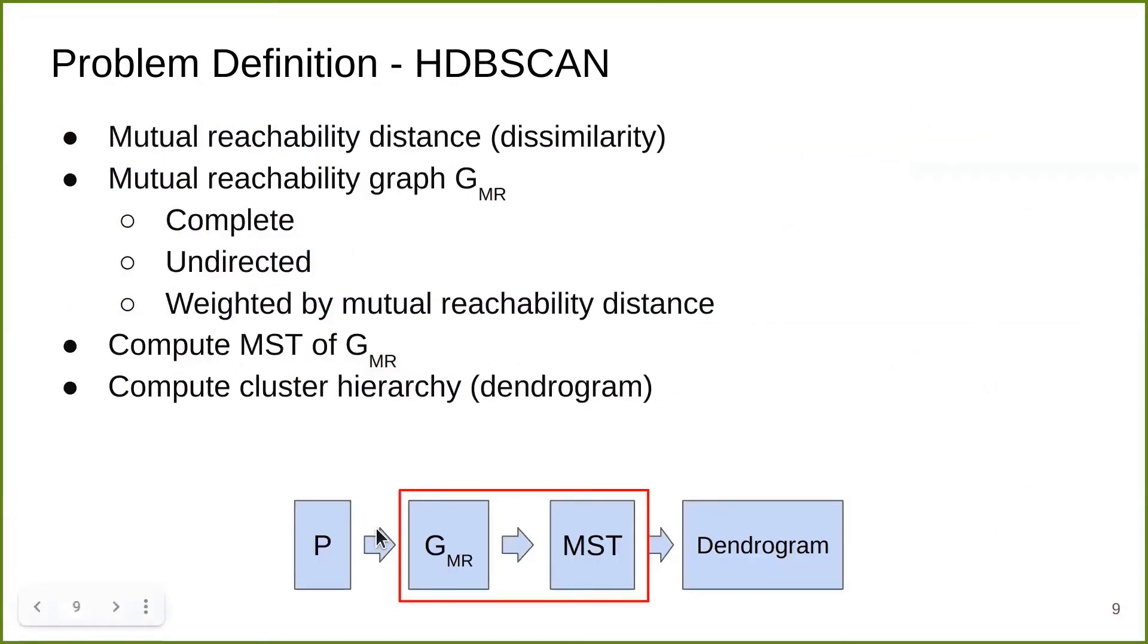Now we know the dissimilarity measure between any pair of objects. We can construct a graph which is complete and undirected. After that, we can compute MST of this graph. With the MST, we further compute a dendrogram, which is a cluster hierarchy.